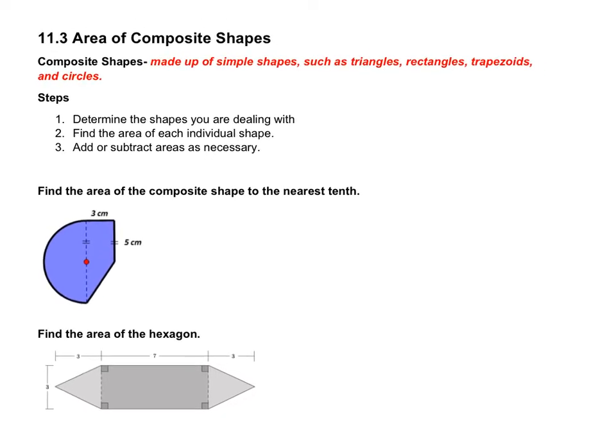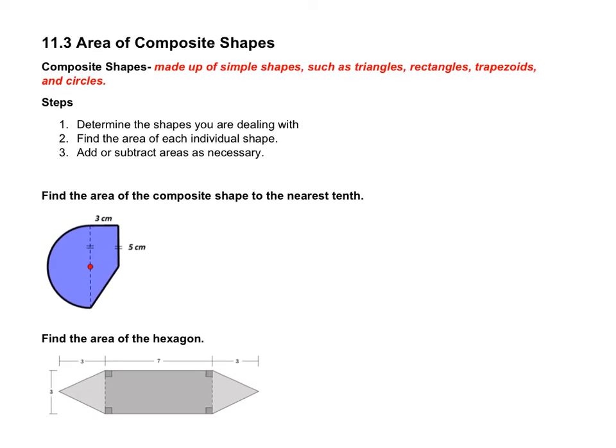So here are the steps for dealing with these problems. Step one, determine the shapes you're dealing with. Step two, find the area of each individual shape. And step three, add or subtract your areas as necessary. For the most part you're typically going to be adding. We'll go over when you subtract later on.